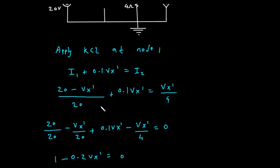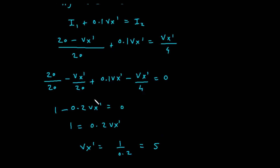To solve for Vx prime, let's move all terms to one side of the equation. This gives us: 20 divided by 20, minus Vx prime divided by 20, plus 0.1 Vx prime, minus Vx prime divided by 4, all equals 0. Let's simplify this. 20 divided by 20 is 1. Now let's combine all the terms containing Vx prime: minus Vx prime divided by 20, plus 0.1 Vx prime, minus Vx prime divided by 4. This simplifies to minus 0.2 Vx prime.